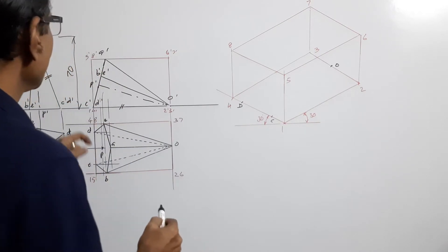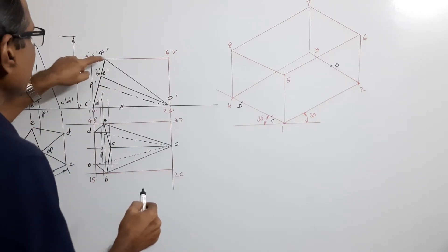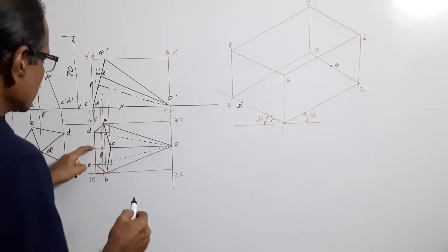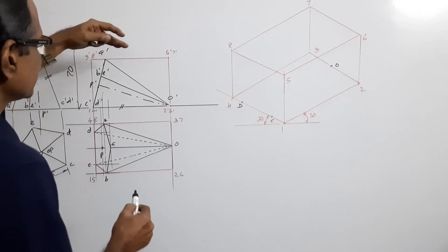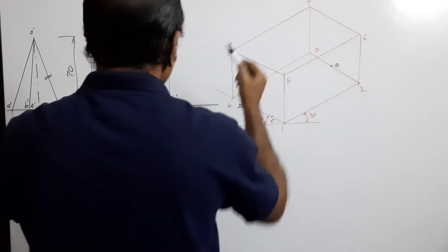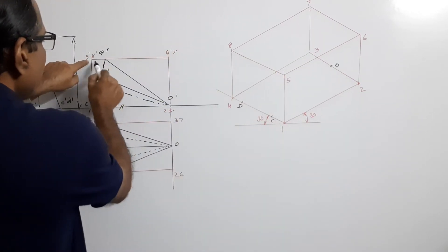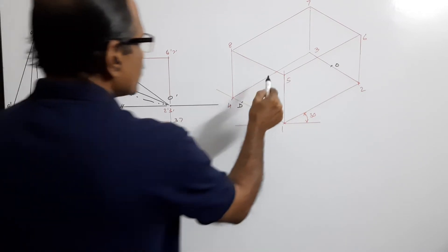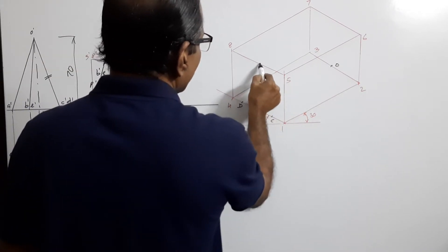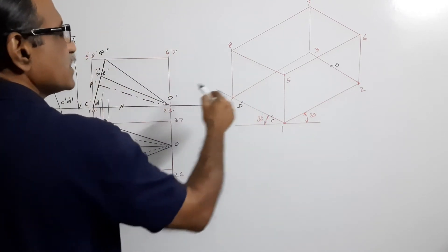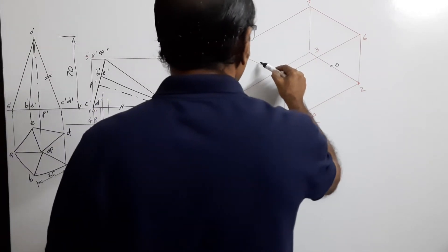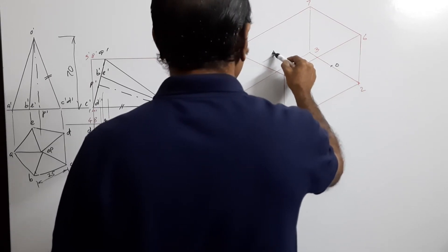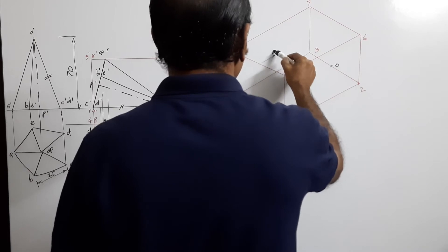Where is a? A is on the top surface 5-6-7-8. Locate the center of 5-8, then draw this distance in this direction — that is point a.